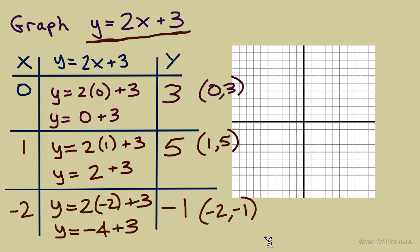Now that we have ordered pair solutions, we're going to plot those points. First, (0, 3). Horizontally 0 and then up 1, 2, 3. Next point, (1, 5). Over 1, up 5. Our last point was (-2, -1). From the origin to the left 2 and down 1.